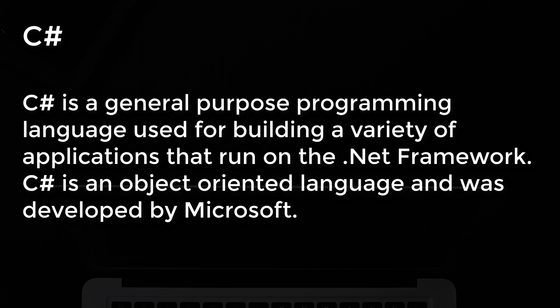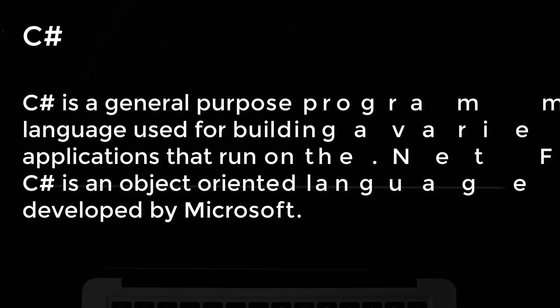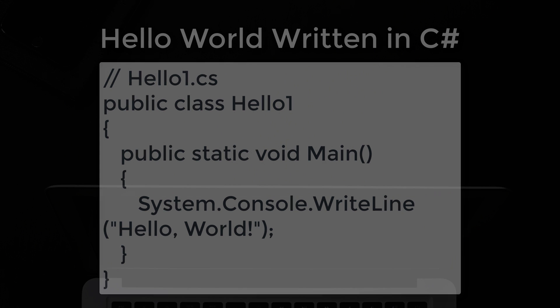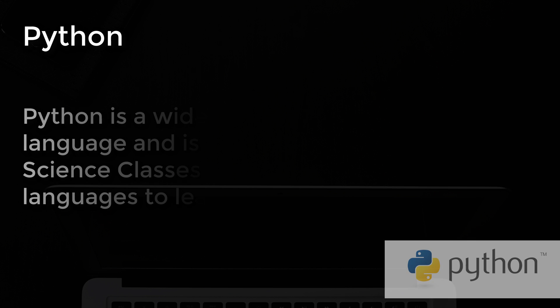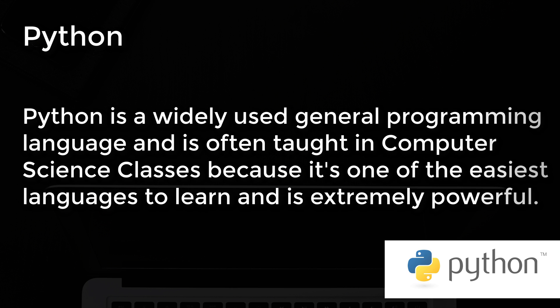Number 5: C#. C# is a general-purpose programming language used for building a variety of applications that run on the .NET framework. C# is an object-oriented programming language and was developed by Microsoft. This is how you write hello world in C#.